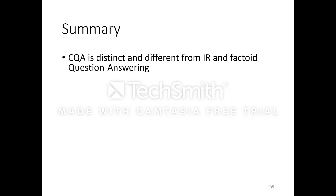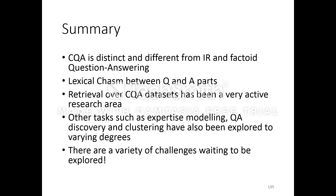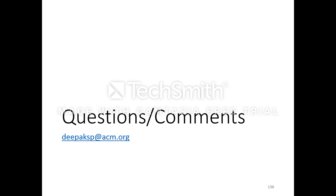In summary, CQA is a distinct field, different from information retrieval and factoid question answering. It differs from IR in that it is a two-part text document with a lexical chasm problem. It differs from factoid QA in that factoid answers tend to be noun phrases or a few words, whereas CQA answers are typically much longer than the questions. The lexical chasm between Q and A parts has been a very active research area, while tasks like expertise modeling and QA clustering have been explored only to a limited extent. There are a variety of challenges waiting to be explored. Feel free to email questions to DeepakSP@ACM.org. Thank you.